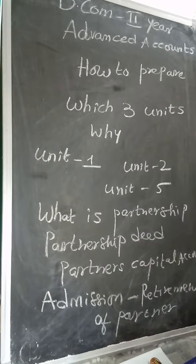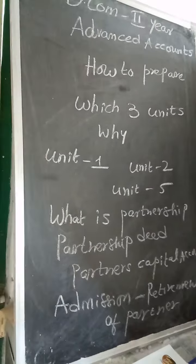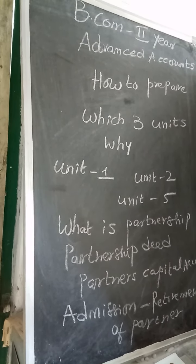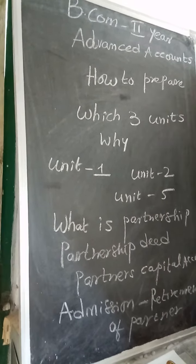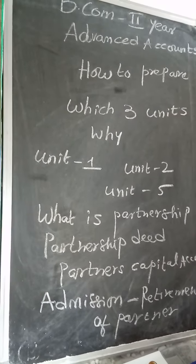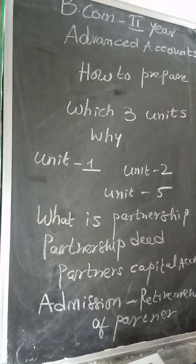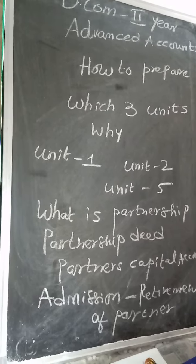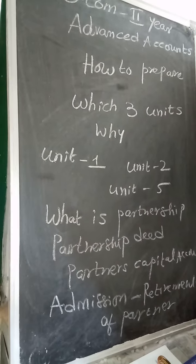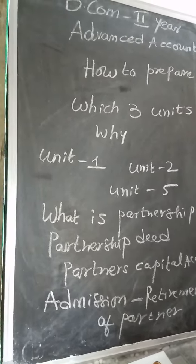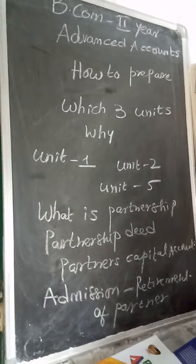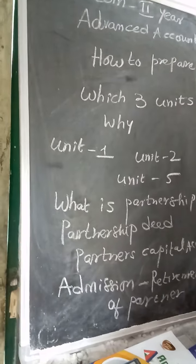Partnership is an agreement between two or more parties to do business jointly by contributing capital. The maximum number of partners is 20. In case of a banking-related business, it is only 10.